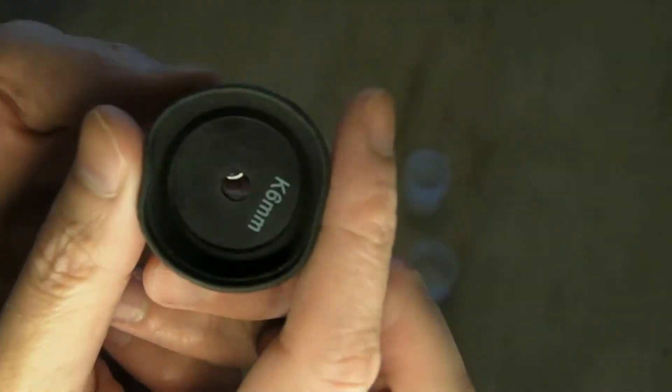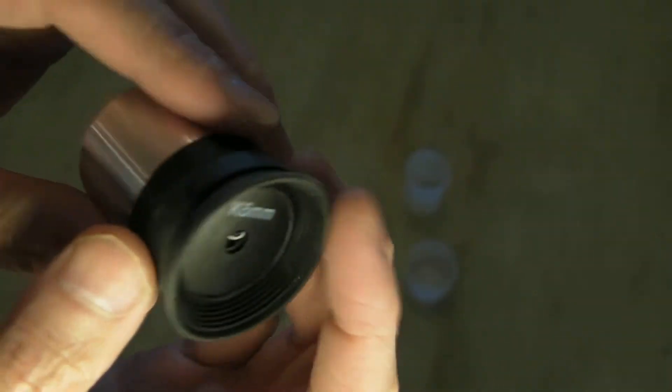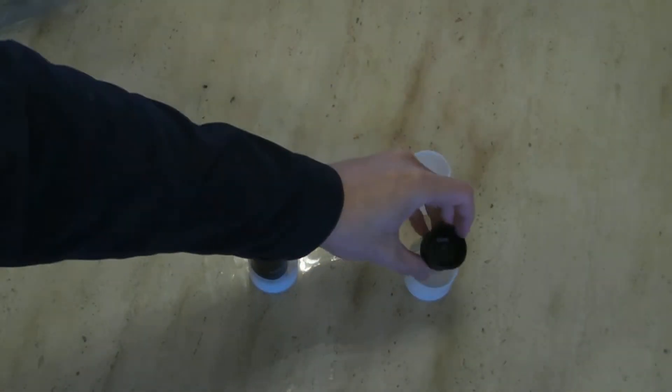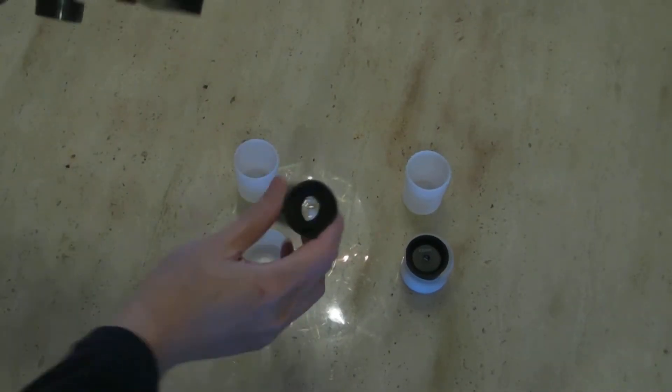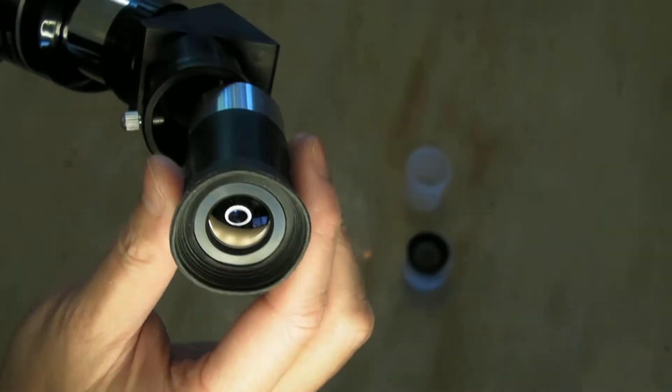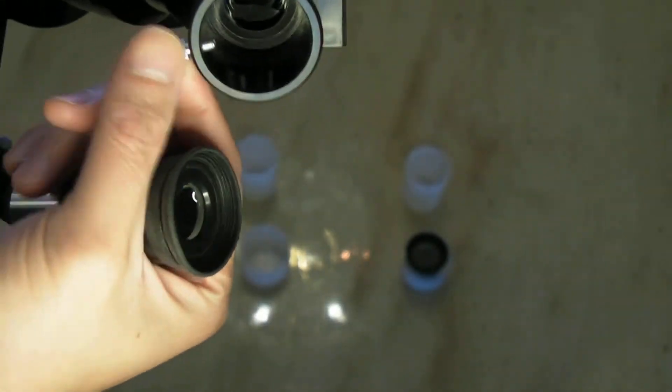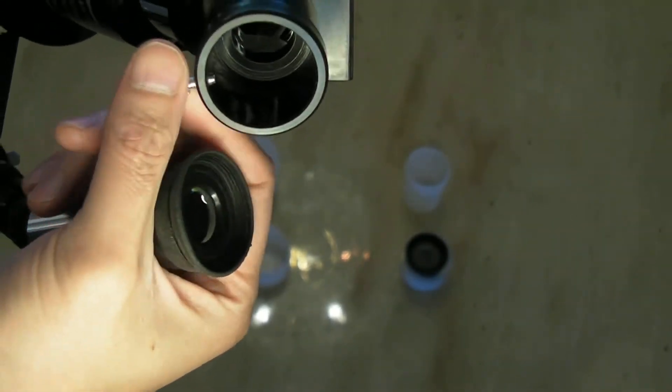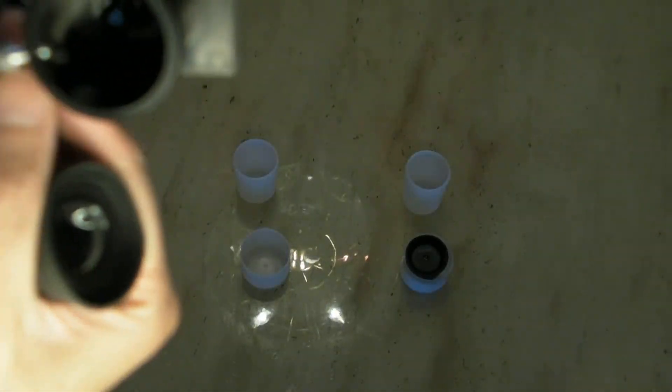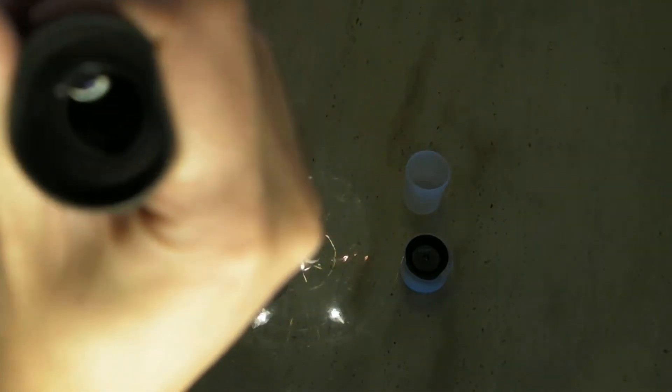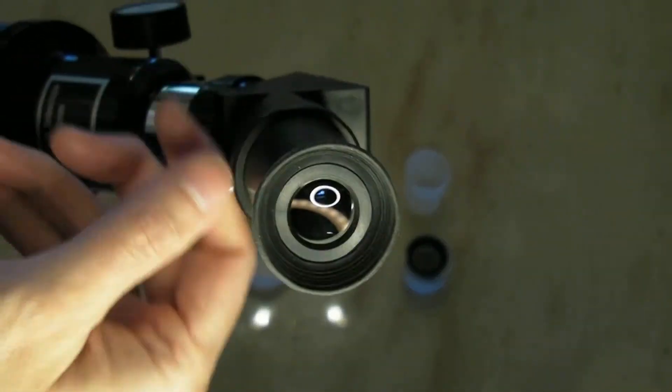And you would just place these eyepieces into your scope here. You have to adjust your screw, pop in your scope, and tighten it back up.